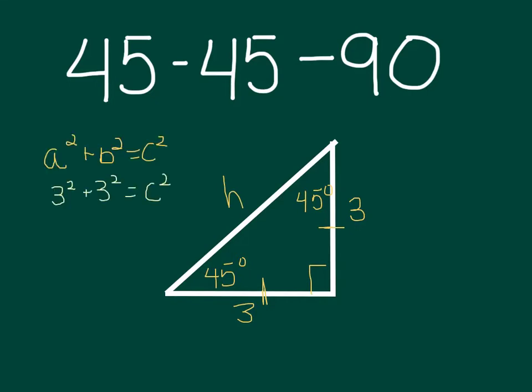Now I've started the Pythagorean theorem on the left: a² + b² = c². So I know 3² + 3² has to equal whatever my h² is, my c². So that's going to be 9 + 9 which is 18 equals c².